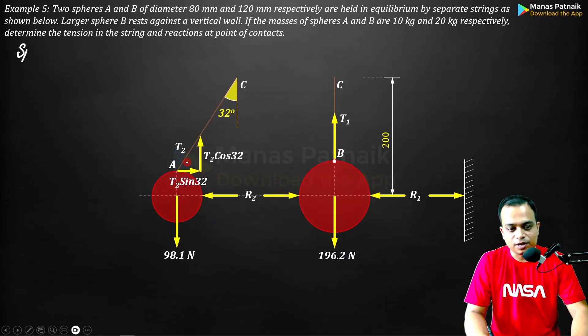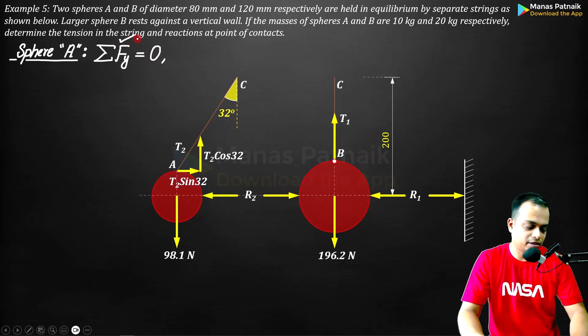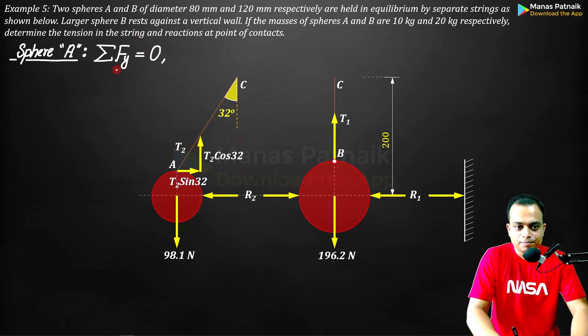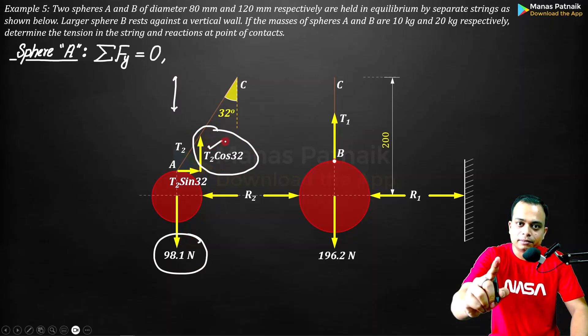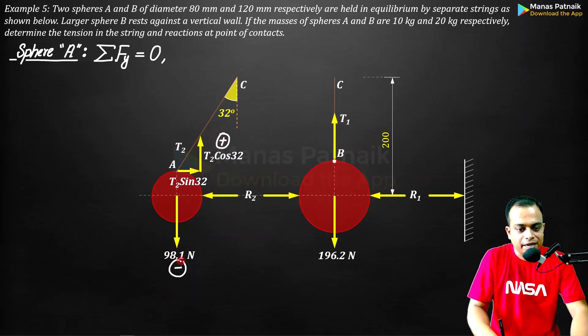Start with sphere A and apply the first equilibrium condition. Why am I starting with summation Fy equals zero? Along the y direction you have two forces: T2 cos 32 and 98.1. Two forces, one unknown, means one equation and one unknown can be solved easily. T2 cos 32 is positive, 98.1 is negative. Solve for T2, you get 115.67 Newtons.